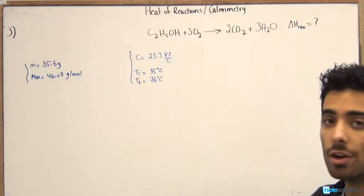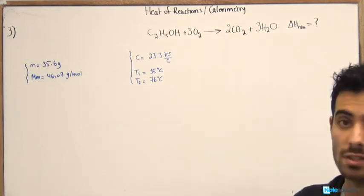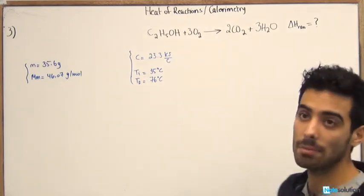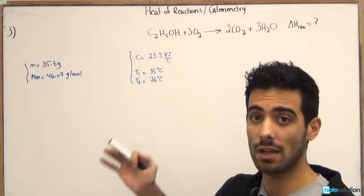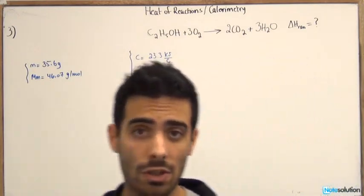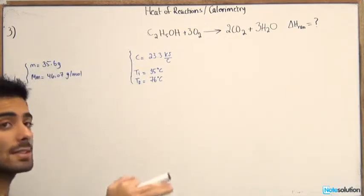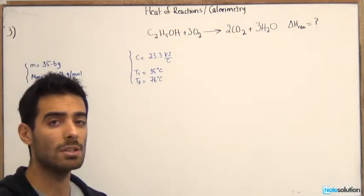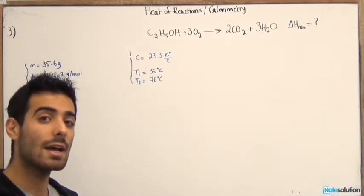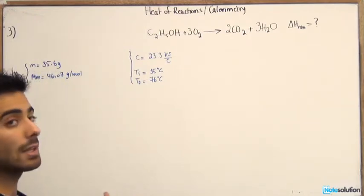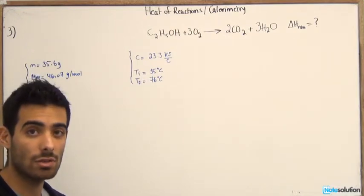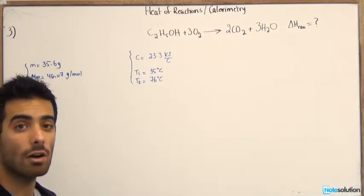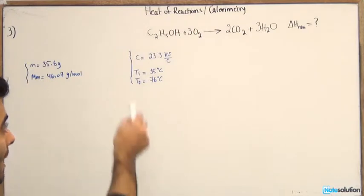Hi guys, in our third example about heat reactions in calorimetry, we're gonna go through a medium question. If you guys watched the second video that we made about the second example, this is an example that deals with the same combustion reaction, but instead of actually finding the heat capacity of the calorimeter, we're asked to find the delta H reaction, or the heat of reaction of this combustion reaction, ethanol.